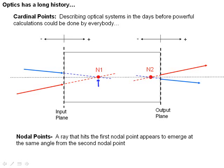they will appear to come out at the same angle from nodal point number 2. So think about this ray coming in. If we extend it, it would cross here at nodal point number 1. This ray is going to exit the optical system and appear to come from nodal point 2 inside the system.